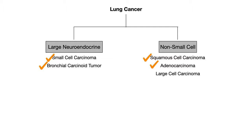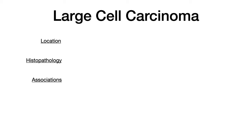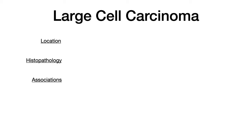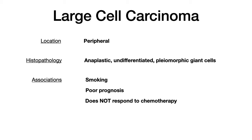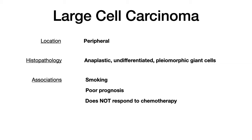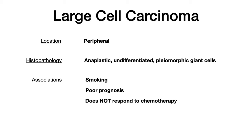We've got one more lung cancer to talk about: large cell carcinoma of the lung. Luckily, large cell carcinoma is extremely straightforward — the name tells you really the only thing you need to know. The location is peripheral, and the classic histopathology is anaplastic, undifferentiated, pleomorphic giant cells. This is the highest-yield thing here: being able to recognize either from an image or the description/buzzword 'pleomorphic giant cell' that you're being shown large cell carcinoma. The name — large cell — tells you this cancer involves giant cells.